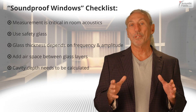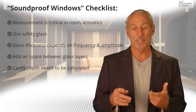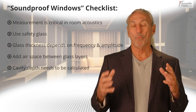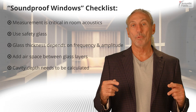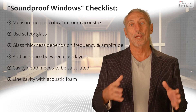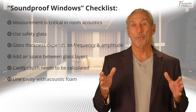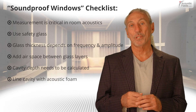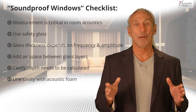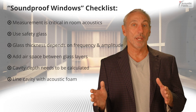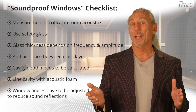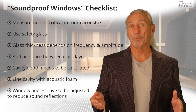Soundproof windows involve a whole combination of variables: thickness of the glass, air space between them. Inside the cavity we line it with foam to control resonance, because that window is a cavity and cavities resonate. We have to make sure the resonances in those cavities don't cause problems. Angle is also very critical, especially in control rooms, because we don't want to create reflections at the listening and monitoring position — which would give the engineer a headache, hearing things that really aren't in the mix.